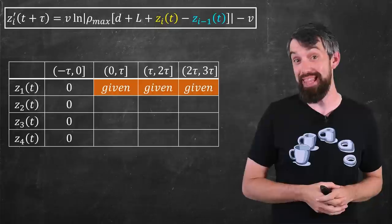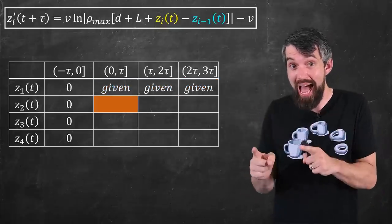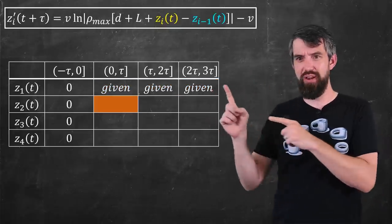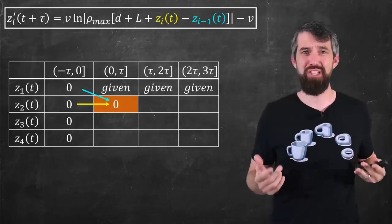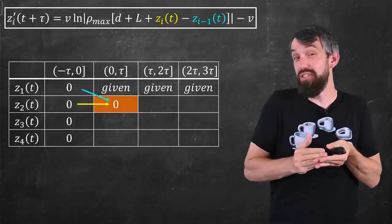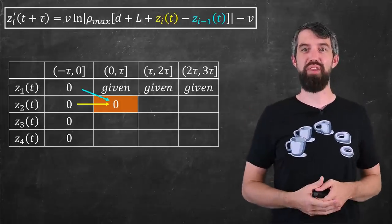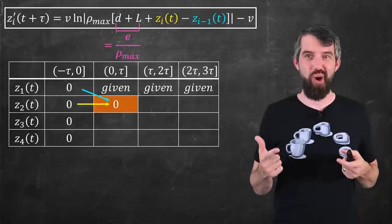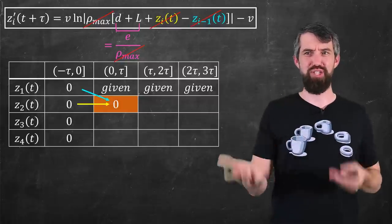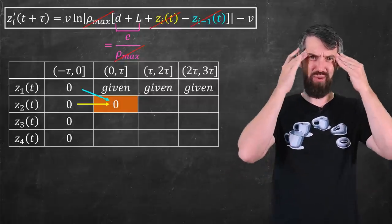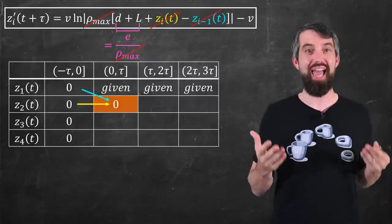Then according to the way this differential delay equation works, if I wanted to compute out, say, this cell, this is going to be governed by z_2 prime of t plus τ, but in the equation, the z_1 and z_2 that are going to be relevant are both at time t. So the two pieces of information are the z_1 in that negative interval and the z_2 in that negative interval, both of which are 0. And just a quick reminder, the d plus l was e over ρ_max, and so the ρ_maxes cancel, the z's are going to cancel, we're just going to have logarithm of e, which is 1, the v's are going to cancel, and you'll have a derivative of 0, which, since it starts at a displacement of 0, it will end up as 0.